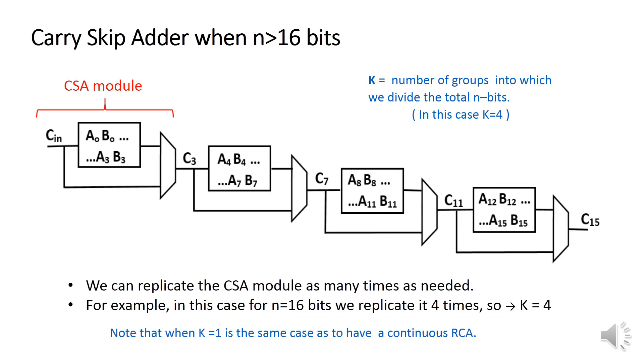Up to now, we have seen the carry skip adder circuit when the number of bits of the processor is 4. Now, the question is, how to do when the number of bits is higher than 4? The answer is, in this case, we can replicate the carry skip adder module as many times as needed. For example, for n equals 16 bits, we can replicate it 4 times. And this is the circuit.